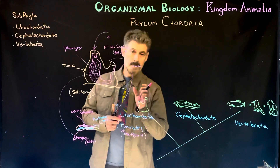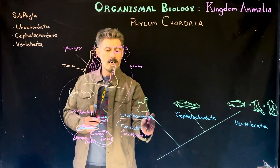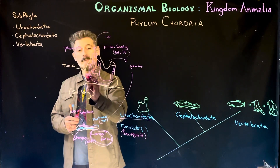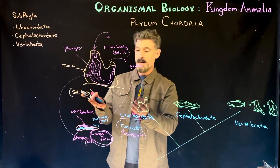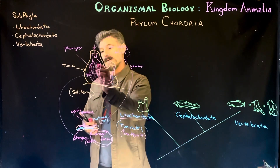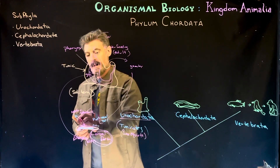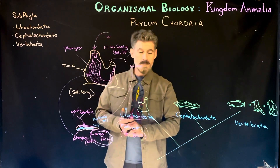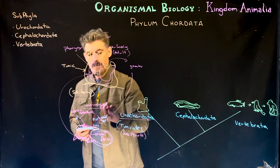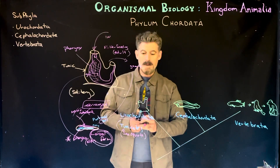The larval form of the urochordata displays all the core hallmark characteristics of the chordates, but then they undergo metamorphosis and become this sedentary filter-feeding organism. They tend to lose the notochord completely, and obviously lose their post-anal tail. They keep a nerve cord, but it's no longer a hollow dorsal nerve cord — it's rearranged to a new location in the animal's body. But they keep the pharynx, which becomes their filter-feeding apparatus. Those are the urochordates.